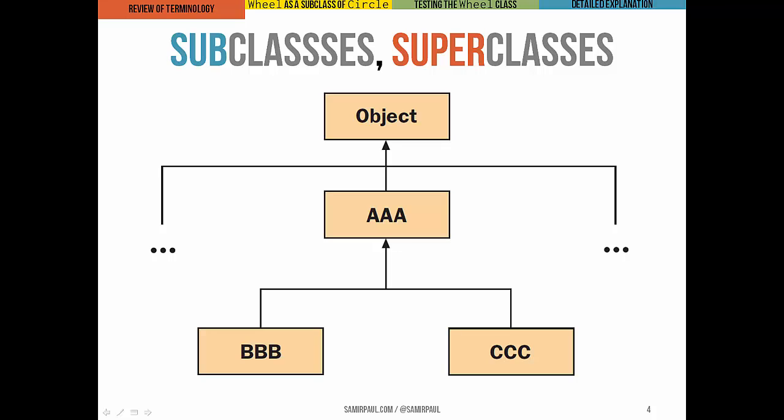But we actually only show one direct subclass, AAA. Because AAA is immediately below Object, we would actually say that AAA extends Object. It's the immediate subclass. In the same way BBB and CCC both extend AAA, their immediate subclasses of class AAA.